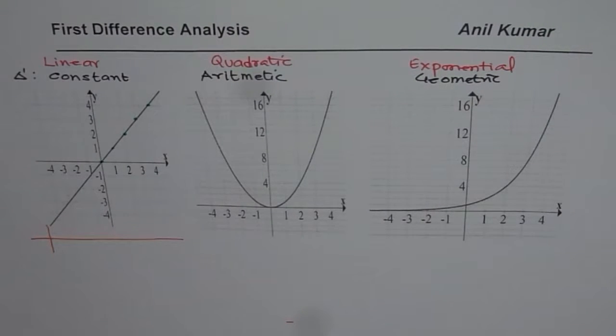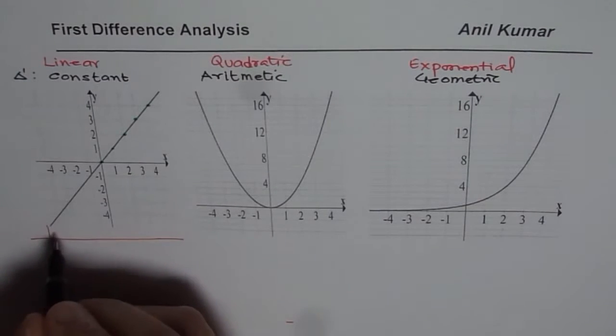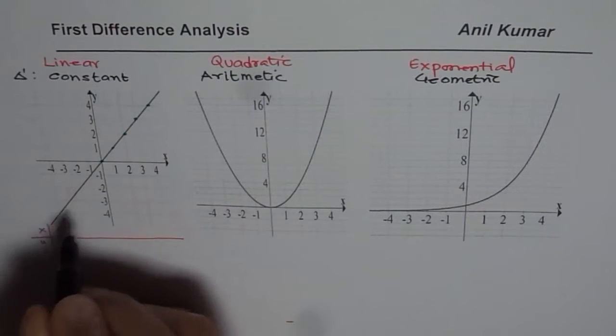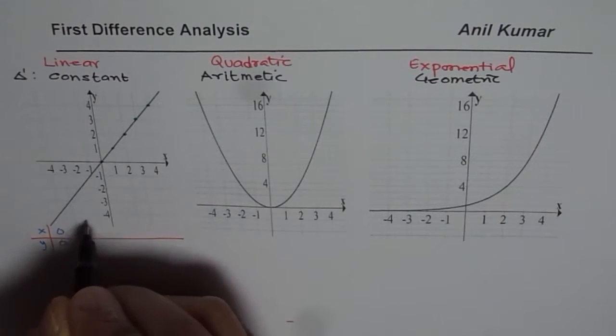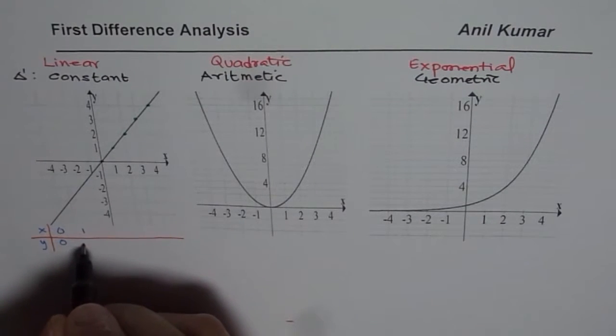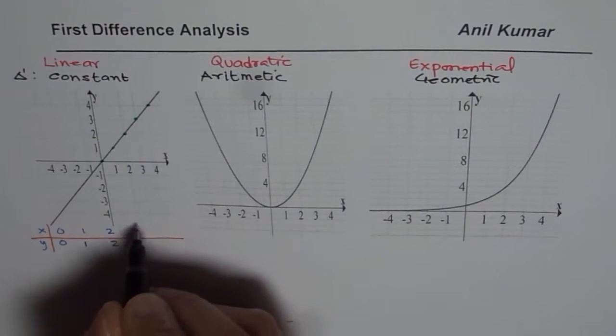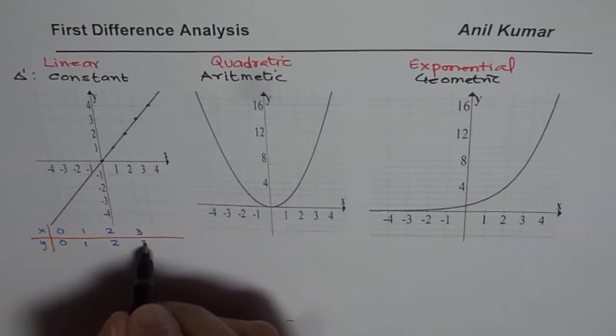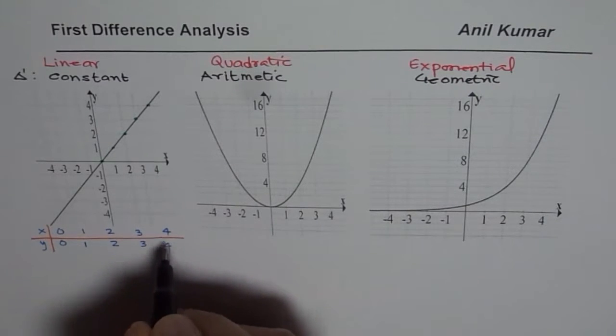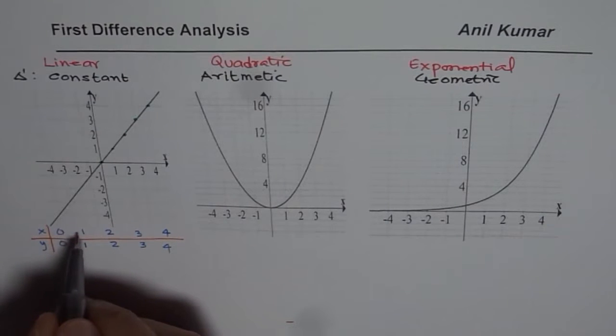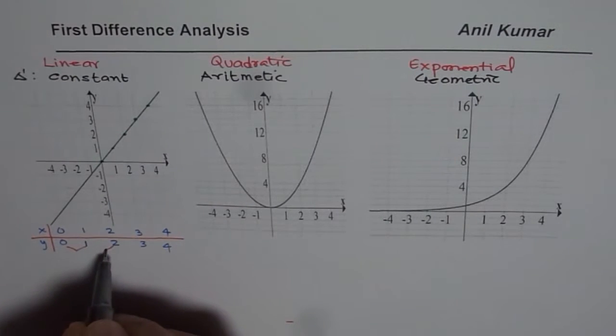So what we notice here is that at 0, x value of 0, y is 0. For x value of 1, y is 1. For x value of 2, y is 2. For 3, it is 3. For 4, it is 4, and so on. So the first difference here is, for every unit change in x, what is the change in y. So that is the first difference.